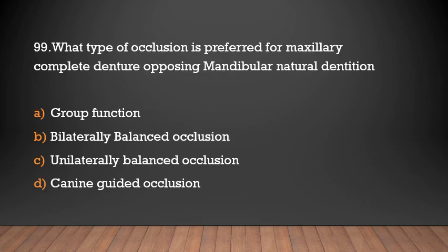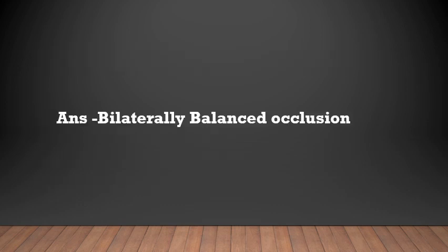What type of occlusion is preferred for maxillary complete denture opposing mandibular natural dentition? Group function, bilateral balanced occlusion, unilateral balanced occlusion, canine guided occlusion. Answer: Bilateral balanced occlusion.